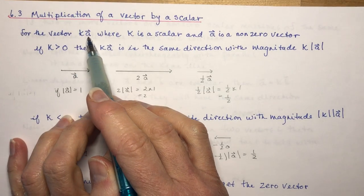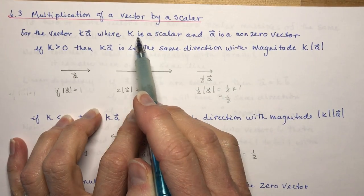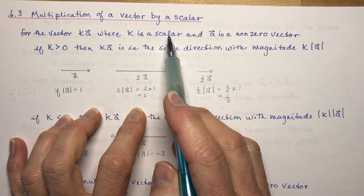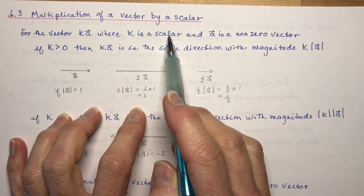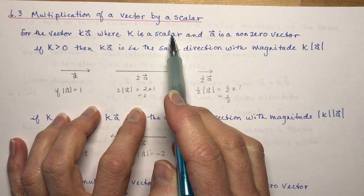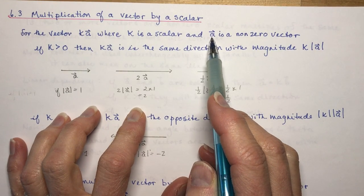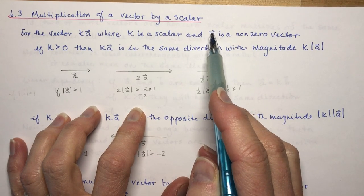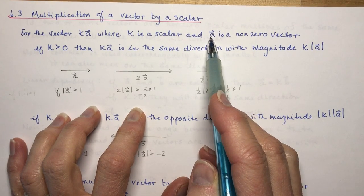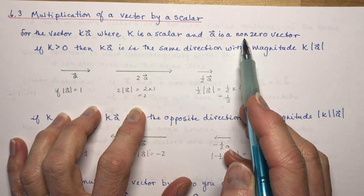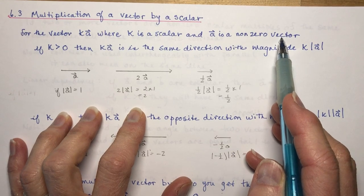For the vector KA, where K is a scalar — just think of that as a real number — and vector A has a sign over it, so it's vector A, which is a non-zero vector.